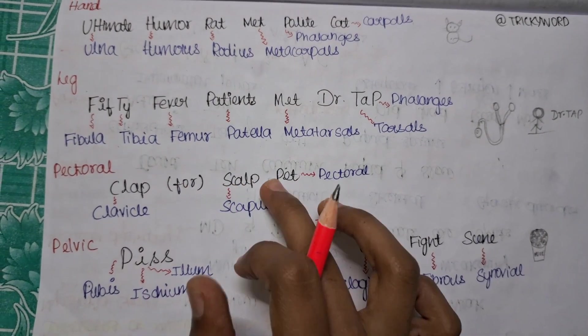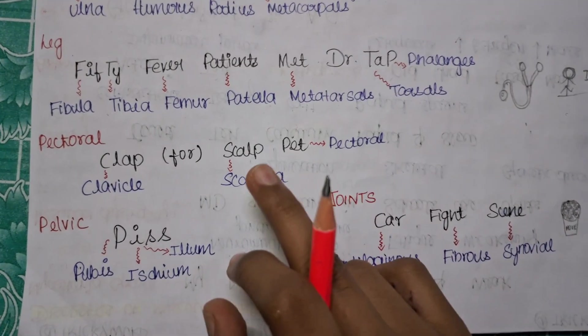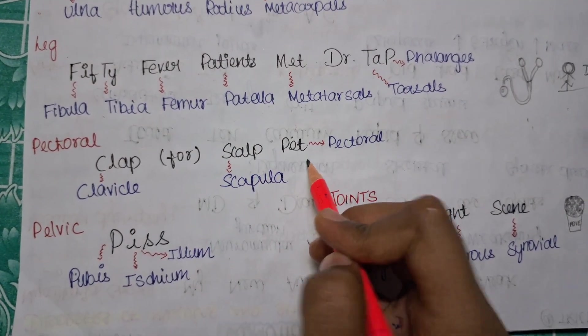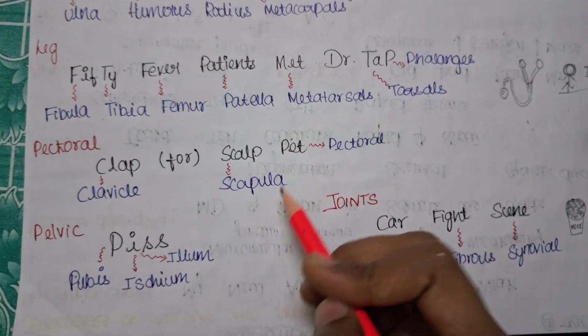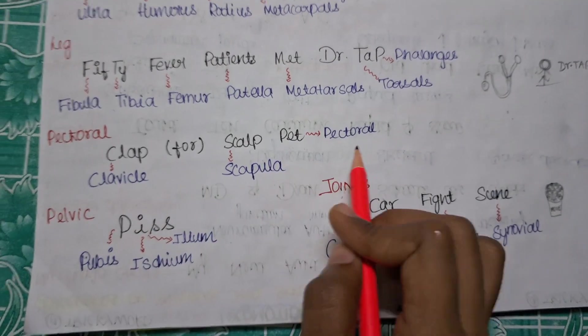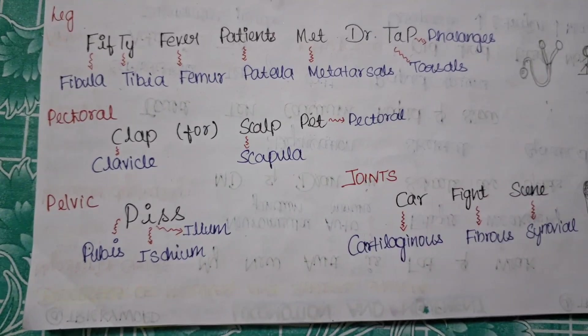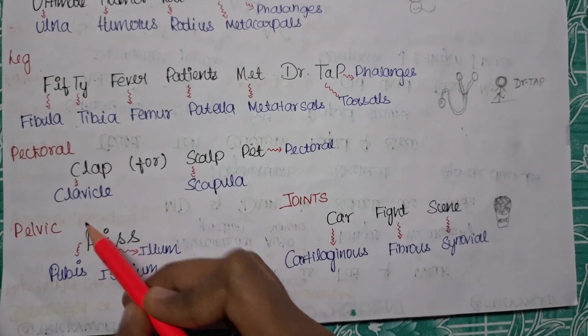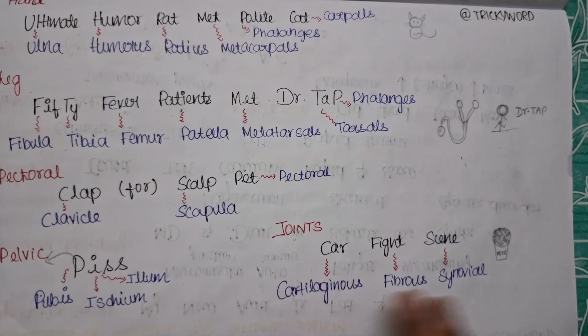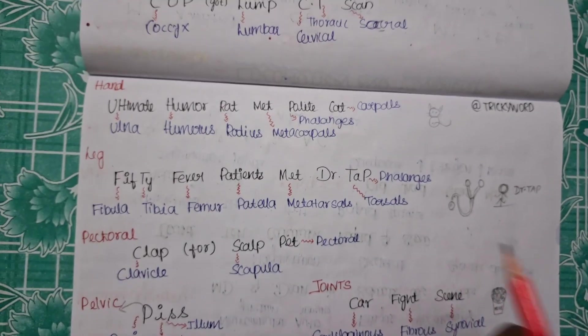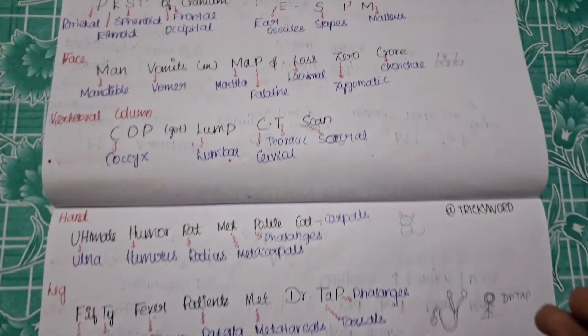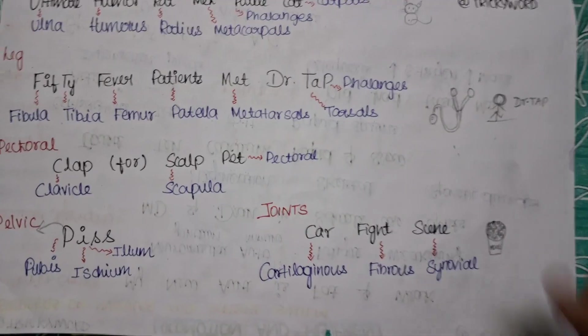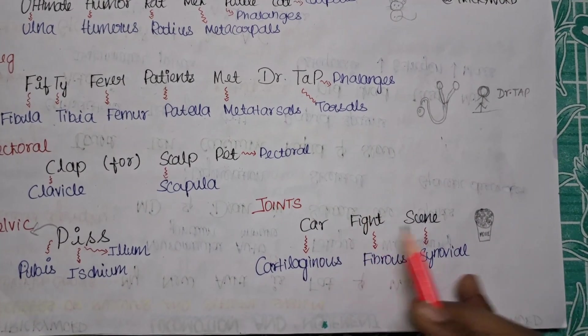Now let's go on to the next one, pectoral girdle. For pectoral you need to remember CLAP for scalp pet. Scalp is a person, he had a pet and it is very good at doing some activity, so we are clapping for the scalp pet. Clap for scalp pet. CLAP is for clavicle and pectoral, and pet is for pectoral. Now pelvic, it is very simple: PISS. In PISS, P is for pubis, I is for ischium, and S is for ileum. And here you can relate with P is for pelvic. Now for the joints, we have also starting from here covered cranium, your ear, face, vertebral column, hand, leg, pectoral, and pelvic girdle. Good. Let's move on to the types of joint. For joints, for the types we have a trick here: car fight scene. You are seeing a movie, you think it is a popcorn movie, and there's a car fight scene. So car is for your cartilaginous, fight is for fibrous, scene is for synovial joint.